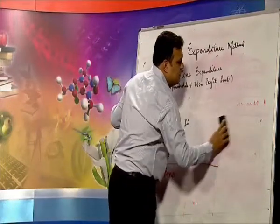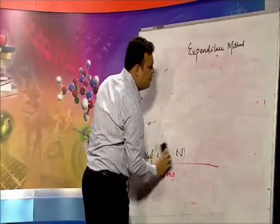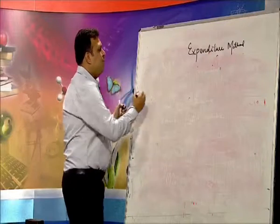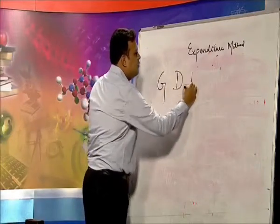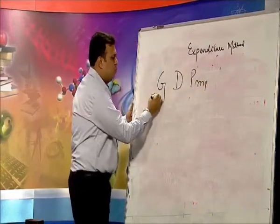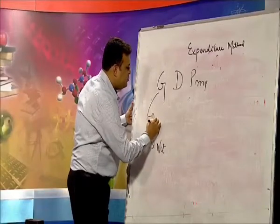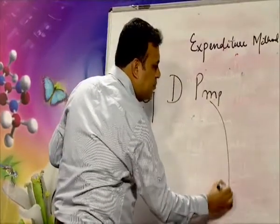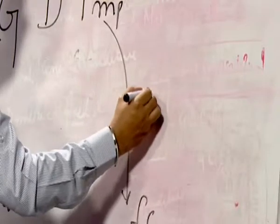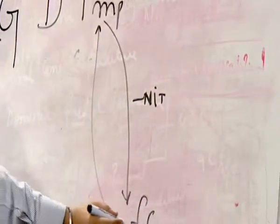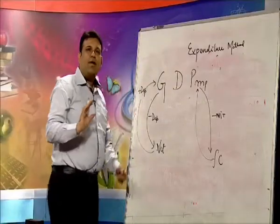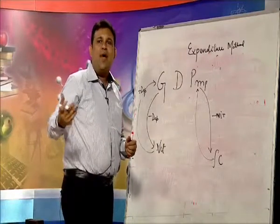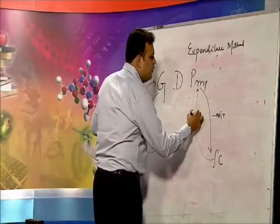Here are some tips to keep in mind when dealing with this method. If GDP at MP is given and you want to make it net, deduct depreciation. If you want to go from net to gross, add depreciation. Similarly, if you want to go to factor cost, deduct NIT. Factor cost means the cost constituting factor inputs — factor owners: land, labour, capital, entrepreneur — your primary inputs. So to go from factor cost to market price, you add NIT.